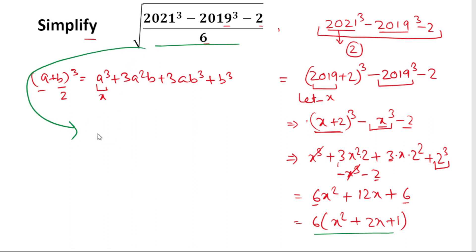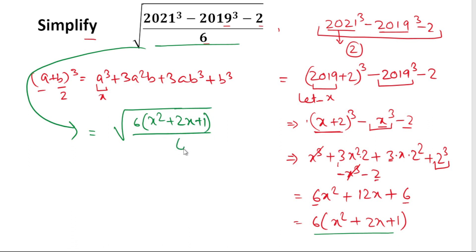Now we write this expression under the radical: the square root of 6 times (x² plus 2x plus 1), divided by 6. The 6 in the numerator and denominator cancel, leaving the square root of x² plus 2x plus 1.